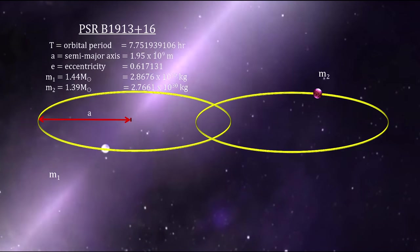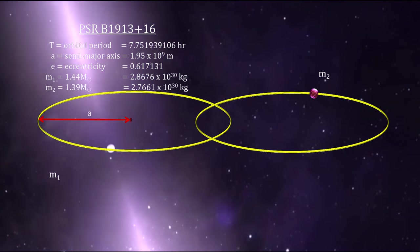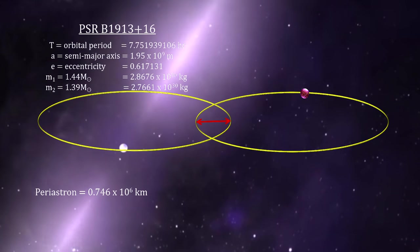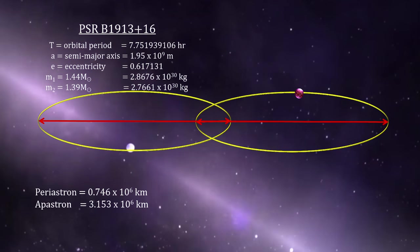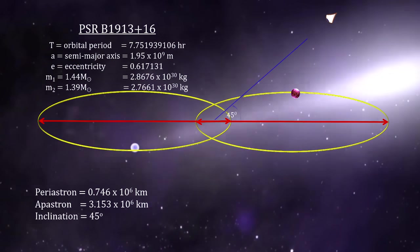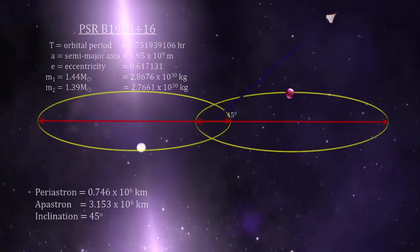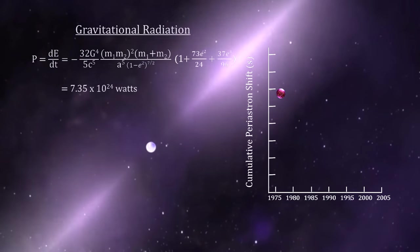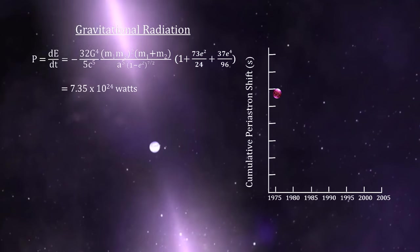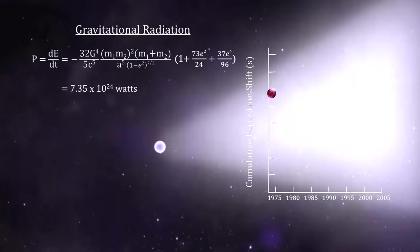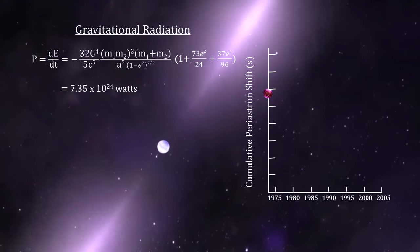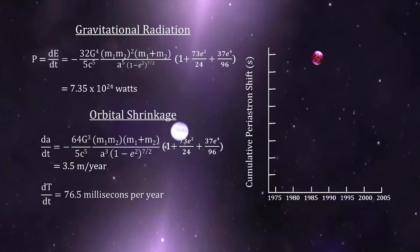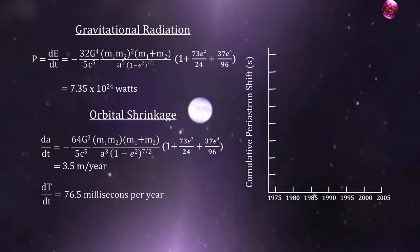Using the orbital motion they calculated the star's masses, their closest approach called a periastron, and their furthest distance apart called the apastron as well as the system's inclination. With this information and the gravitational wave equations they were able to calculate the amount of gravitational radiation the expected decay of the orbit due to the lost gravitational energy and the corresponding reduction in the time it takes per orbit.